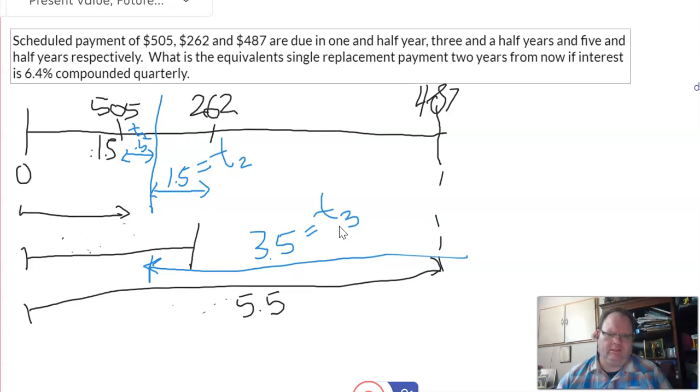Now, a little aside. If you're going back in time, it's present value. If you're going forward in time, it's future value.